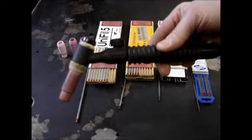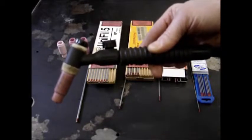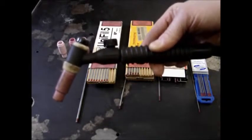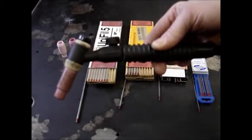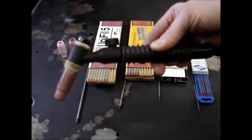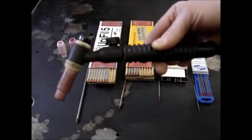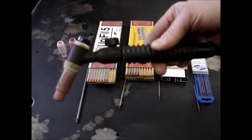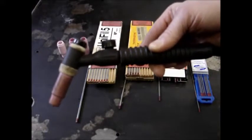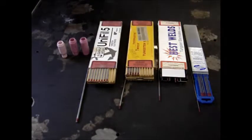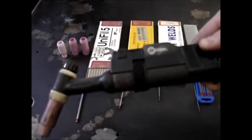This would be your average TIG torch that you would use on average thickness material, and you could use it on thin aluminum, or you could use it on pretty much all of your stainless steels. Once you get to the heavier thickness aluminum, then you would want to go to a water-cooled TIG torch. A water-cooled TIG torch would look like this.